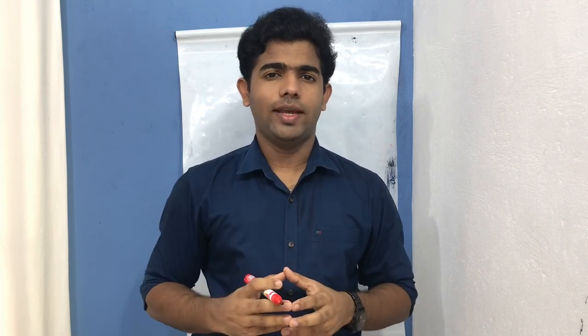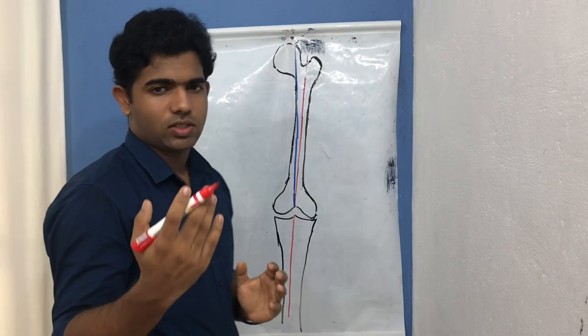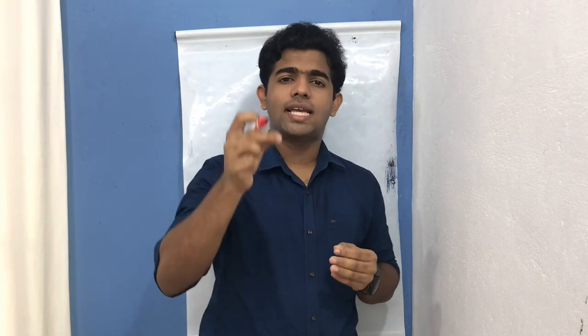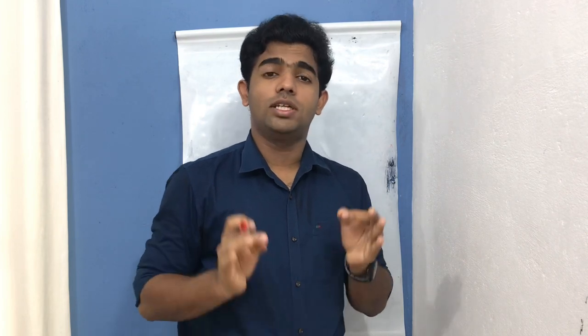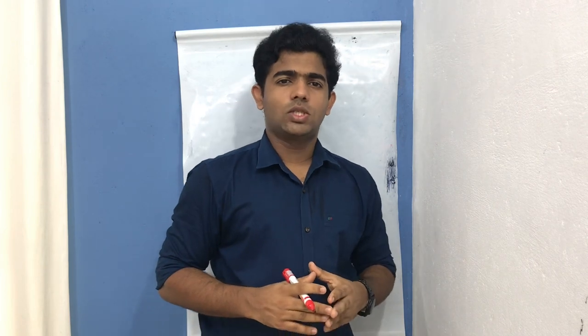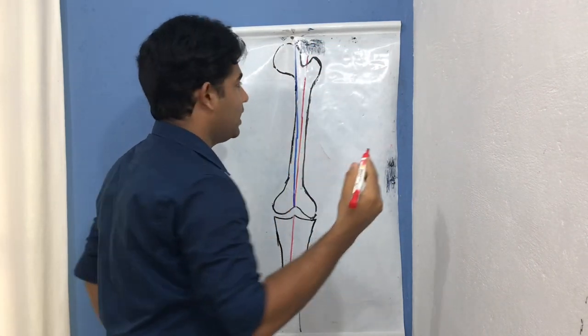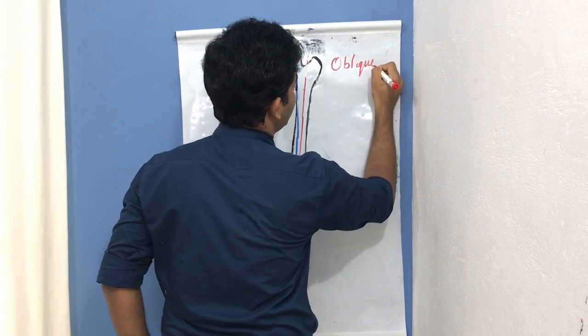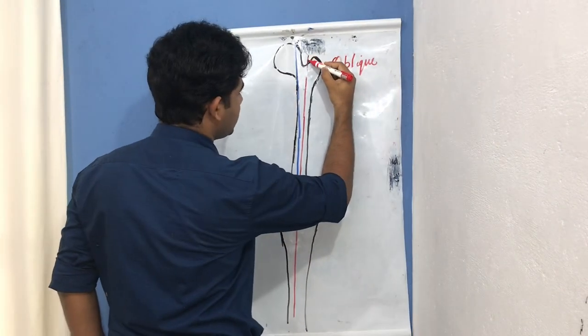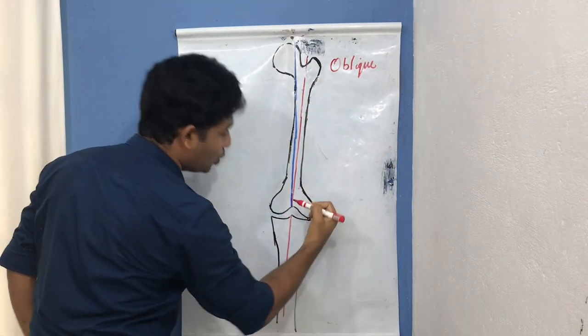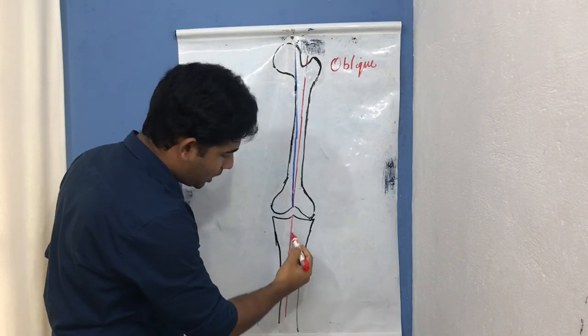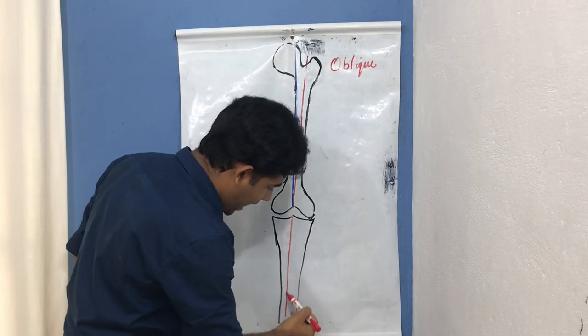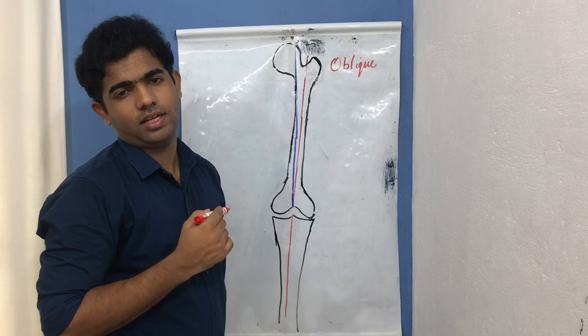Before moving into conditions like genu valgum and varum, we need to know about a few axes of the tibia and femur. The first important one is the longitudinal axis of the femur and tibia. The longitudinal axis is an axis that passes through the center of the long bone, parallel to it. The femur is slightly oblique in nature, and the tibia's orientation is nearly vertical.